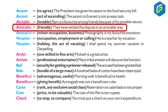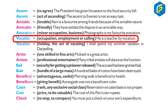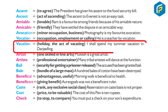Amiable: loveable — 'Ram is a favourite among friends because of his amiable nature.' Amicable: friendly — 'They have settled the dispute in an amicable way.' Avocation: a minor occupation or hobby — 'Photography is my favourite avocation.'